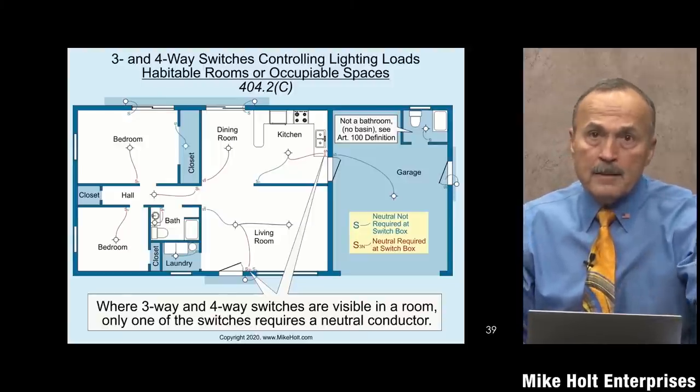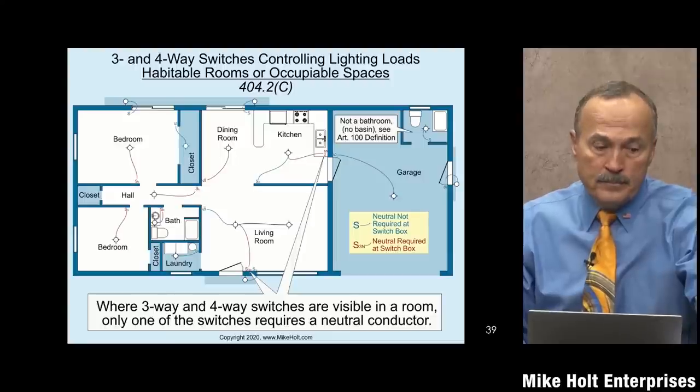You could put neutrals everywhere, but you're required to have at minimum what the code specifies. For larger jobs, adding neutrals throughout an entire house could add a thousand dollars or more. When bidding large housing developments with many units, that cost adds up significantly, so the code is being reasonable by only requiring neutrals where necessary.